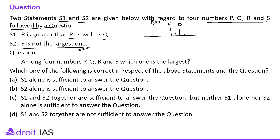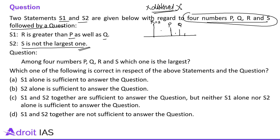S is not the largest one, and importantly the question does not say all four numbers are distinct, so two of them may be equal. Among P, Q, R, S — which one is the largest? Nothing can be said definitively, because R may be equal to S. Therefore S1 and S2 together are not sufficient to answer this question.